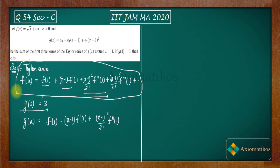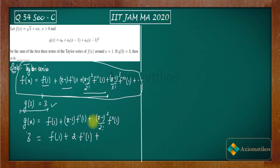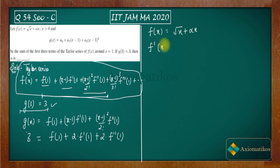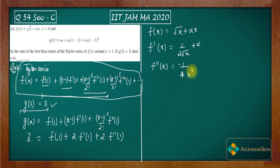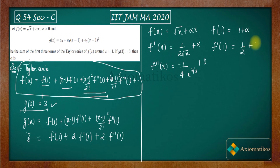Now let us calculate the derivatives of f(x). Since f(x) = root(x) + alpha*x, we get f'(x) = 1/(2·root(x)) + alpha, and f''(x) = −1/(4·x^(3/2)). Evaluating at x = 1: f(1) = 1 + alpha, f'(1) = 1/2 + alpha, and f''(1) = −1/4.